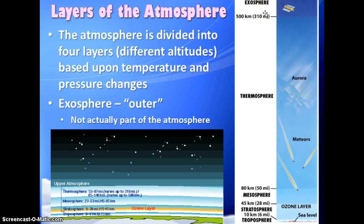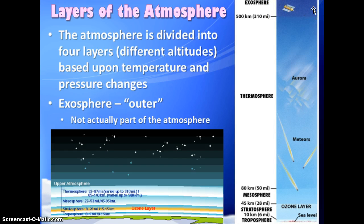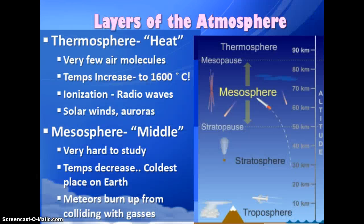In the exosphere, gases are still gravitationally attracted to Earth but starting to thin out and merge with space. The density is so low that molecules can't collide and react with each other. This is where we put satellites — there's still enough gravity to hold onto them so they don't float away, but nothing is colliding with them.